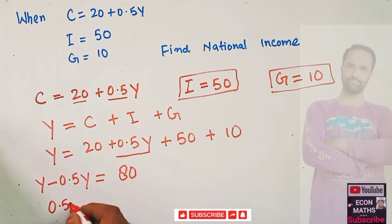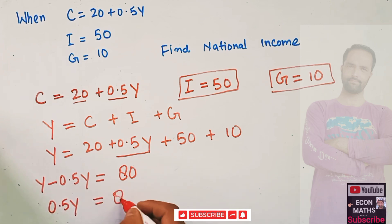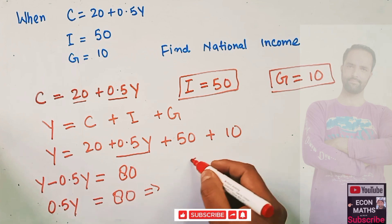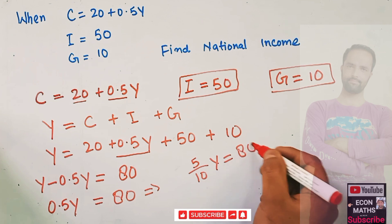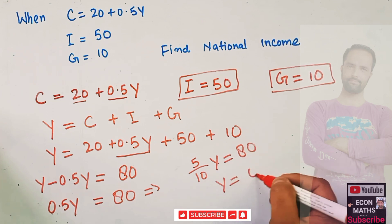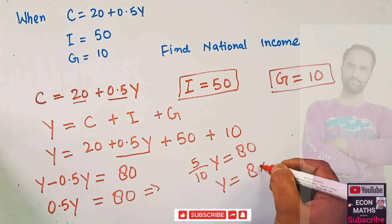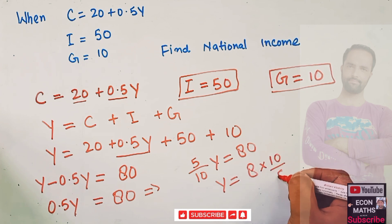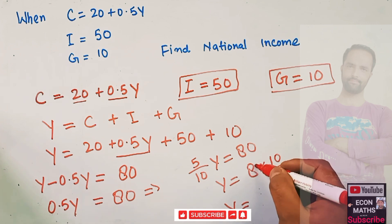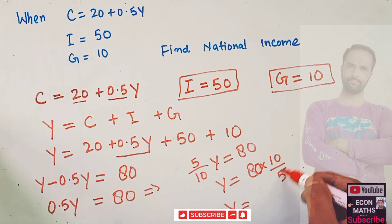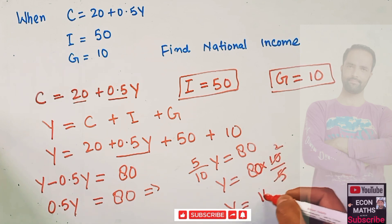We subtract 0.5Y from Y to get 0.5Y on the left, since they are like terms, and that equals 80. Writing 0.5 as 5 over 10, we transpose it so Y equals 80 multiplied by 10 over 5, which is 80 times 2, giving us national income Y equal to 160.